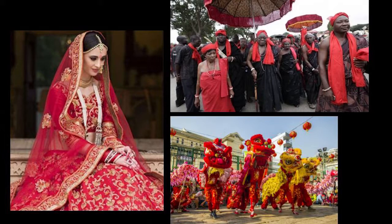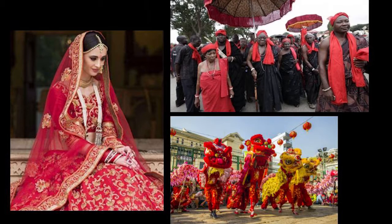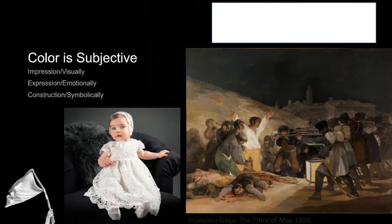One more thing: color is subjective. We have the visual impression of color, the emotional expression of a color, and the symbolic construction of a color — and these aren't universal. They vary based on personal experiences and eyesight. In America, red often symbolizes passion or danger. In India, red is one of the most powerful colors — it represents fear and fire, wealth and power, purity and fertility, seduction, love, and beauty. A married woman can be identified by the red henna on her hands and the red powder known as Sindoor worn along her hairline.